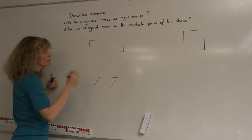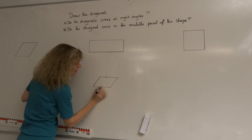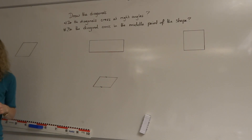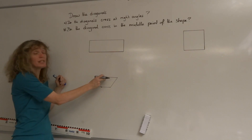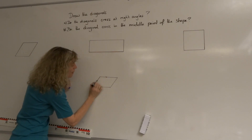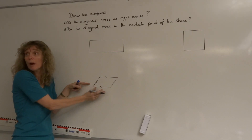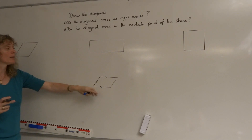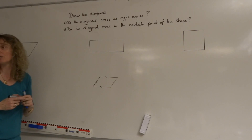In maths, what we usually do to show that lines are parallel, we put a little arrow through them. That tells you that these two lines are parallel. I can't put one arrow through these lines because they're not parallel to that one, but I can show that these two lines are parallel by putting two arrows through. So a parallelogram is when two opposite sides of a four-sided shape are parallel to one another.